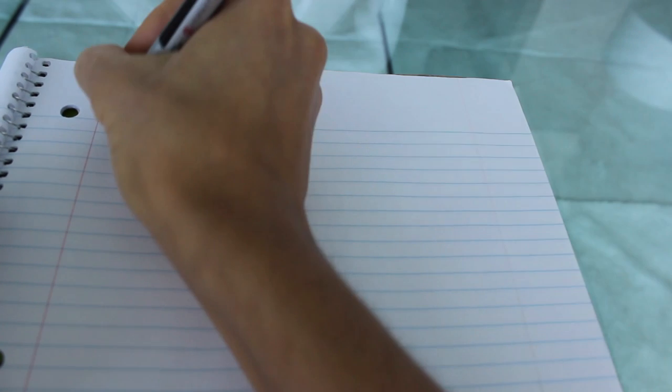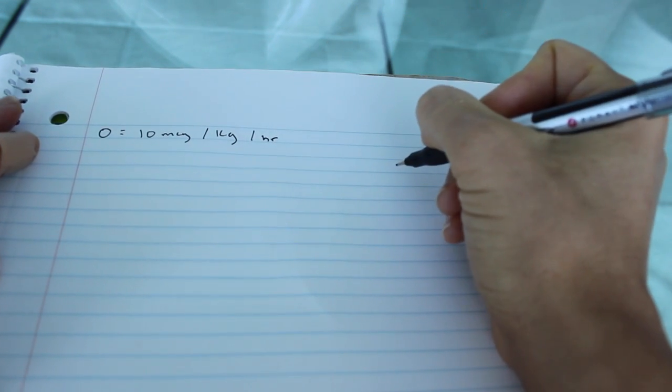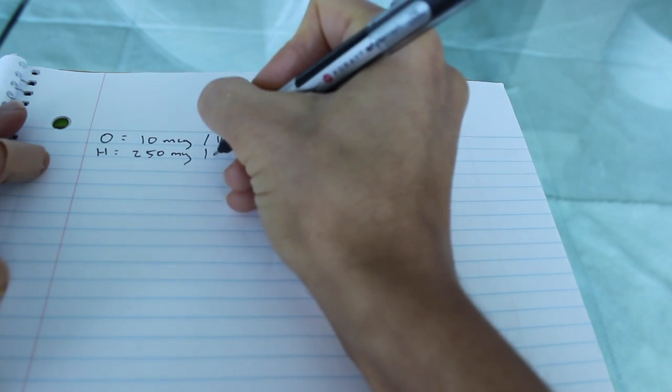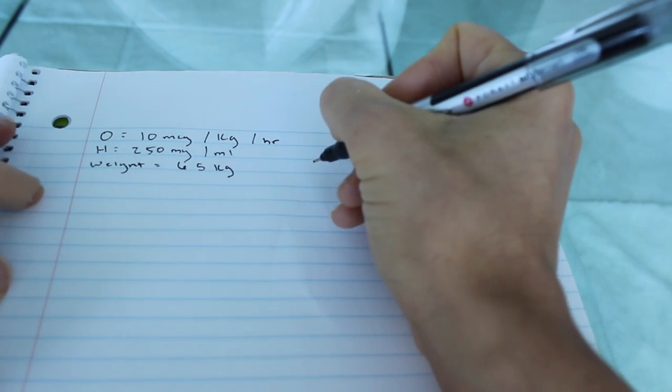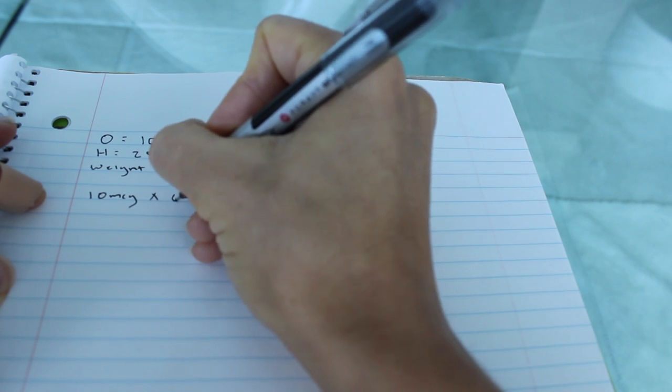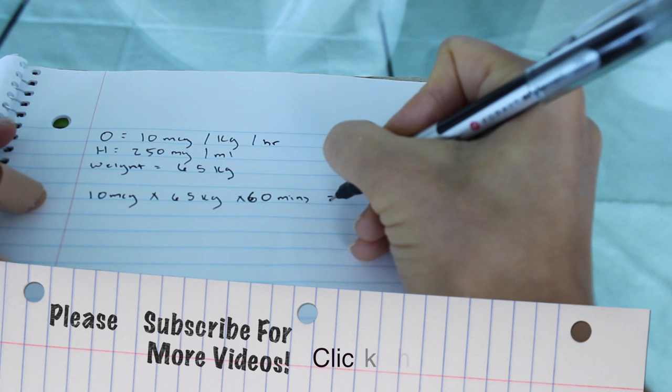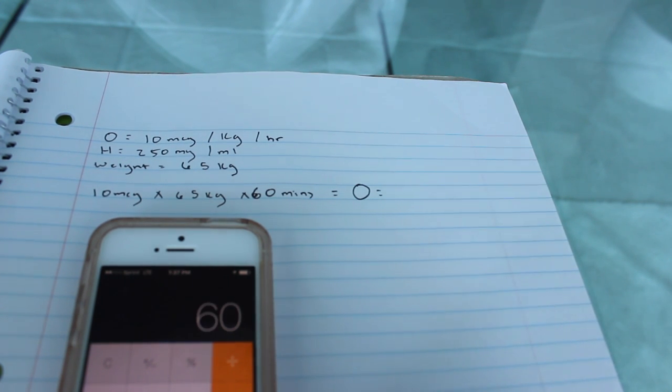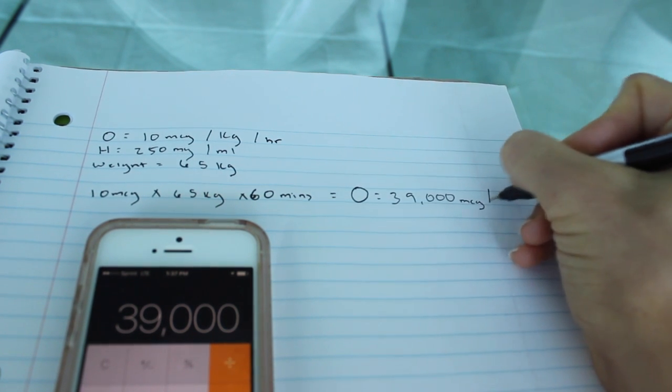Okay, so our order has been increased to ten micrograms per kilogram per hour. We're going to obviously have the same on hand, which is going to be 250 milligrams per mL. The weight is not going to change. It is still 65 kilograms. So now we're just going to do the same equation. So it's going to be ten micrograms times 65 kilograms times 60 minutes. And that's going to be our official order. Ten times 65 times 60. We're going to get 39,000. 39,000. What is it going to be? Micrograms per hour.